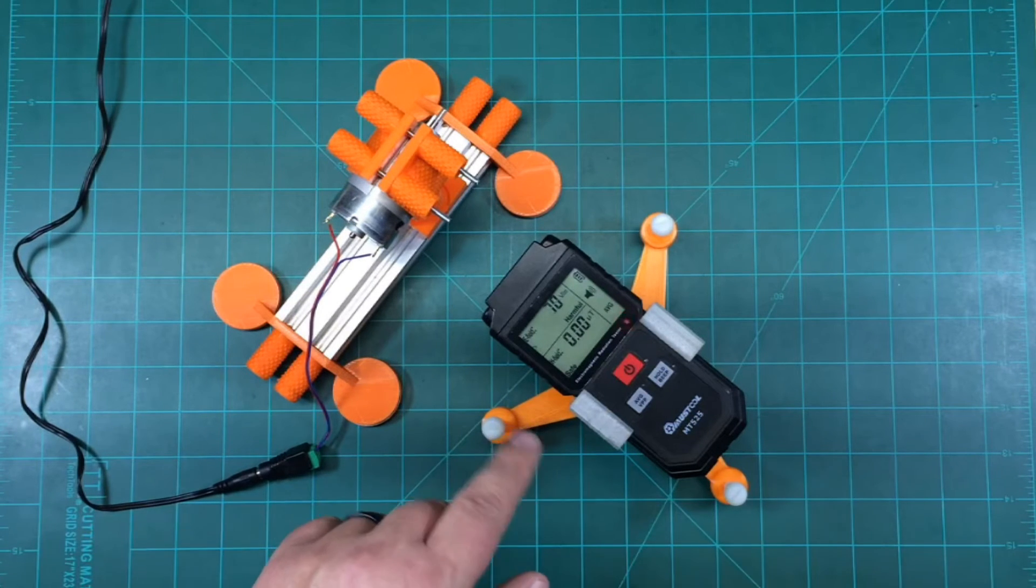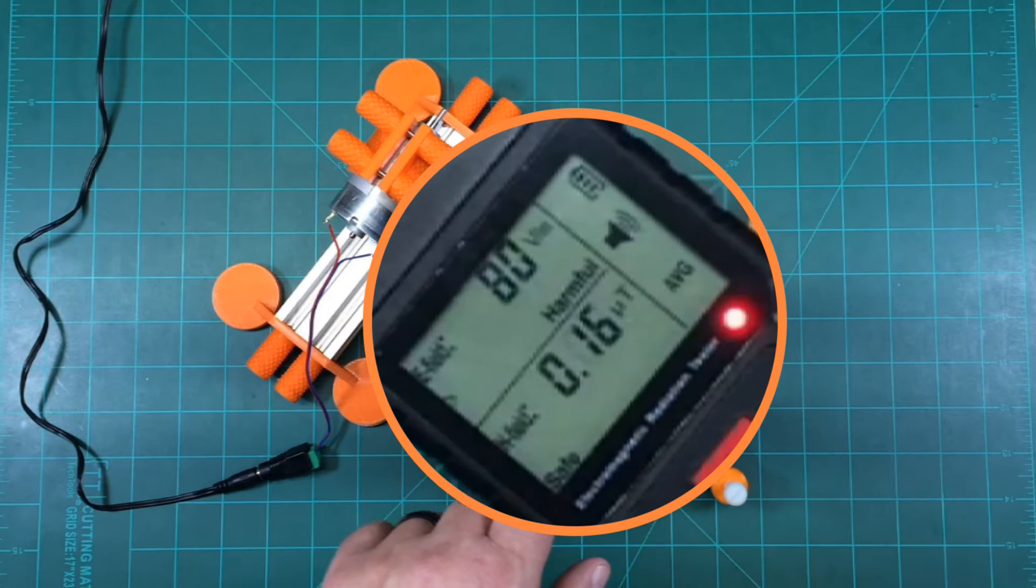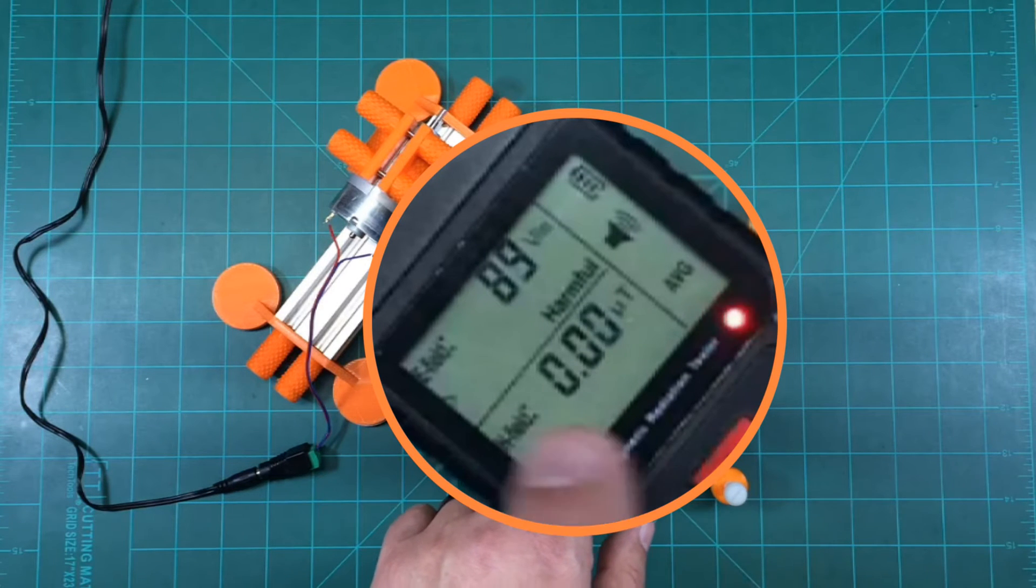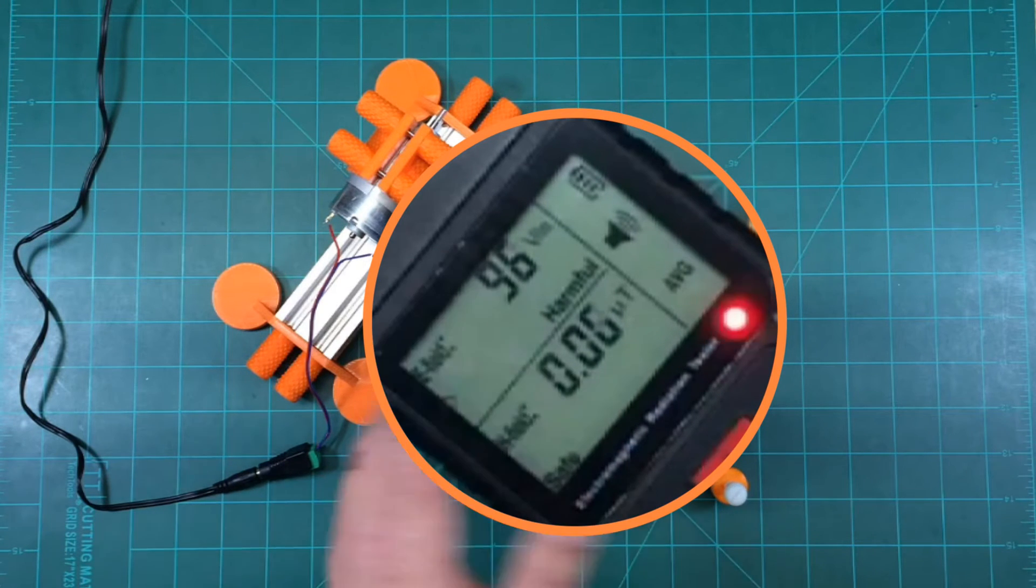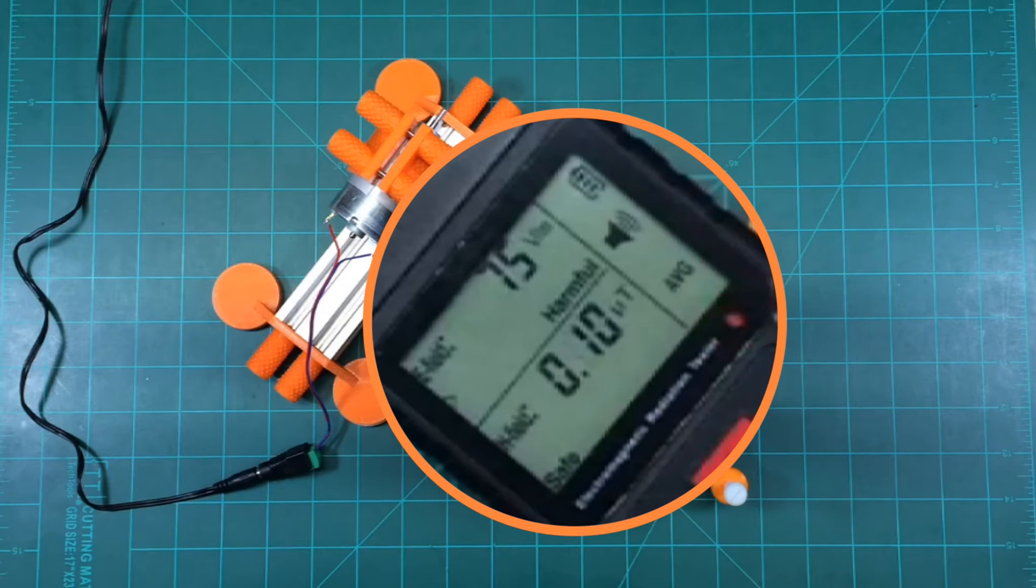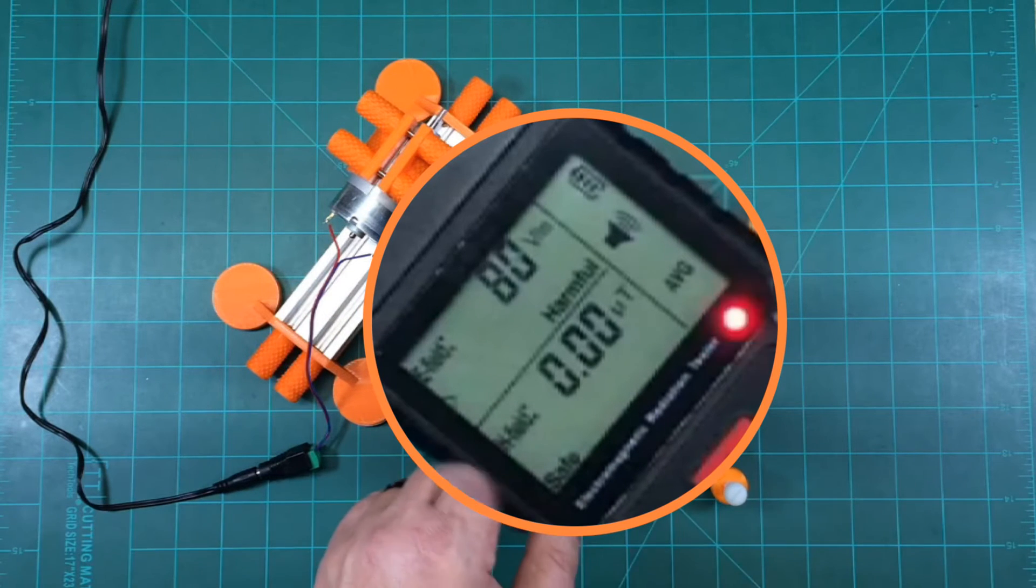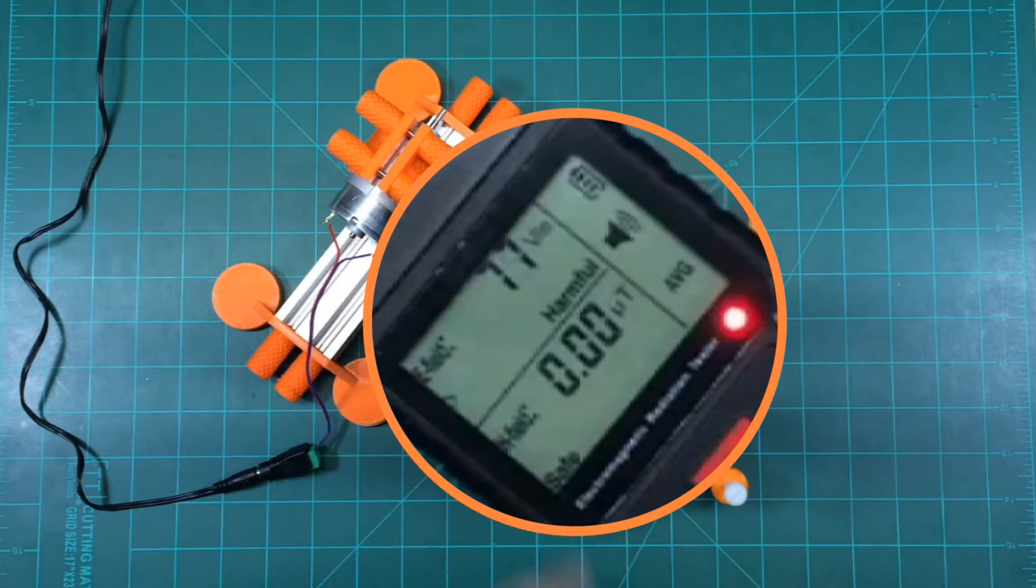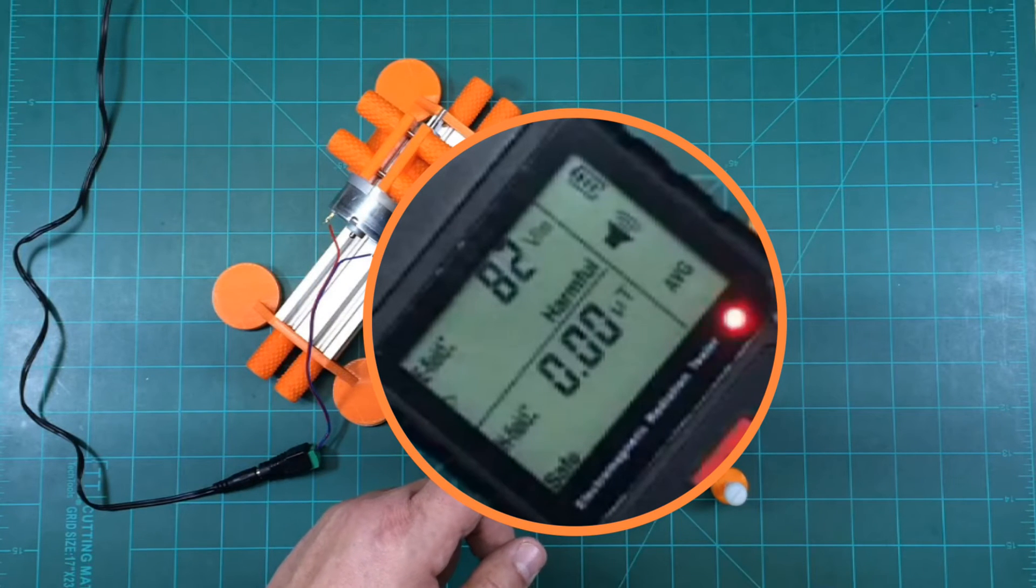Okay, so the motor's running, and we're running about 93, roughly somewhere between 70 and 93 volts per meter. But also, look at the number of micro-Teslas, almost nothing.